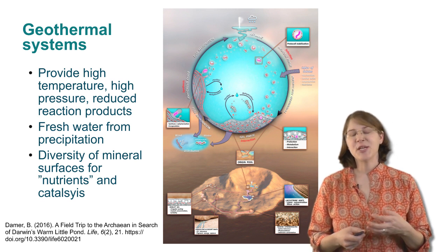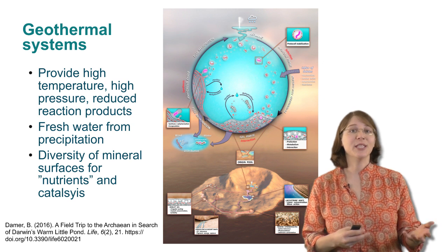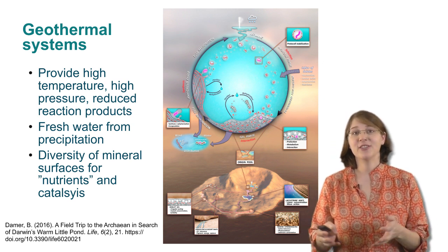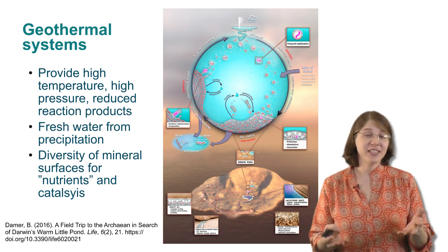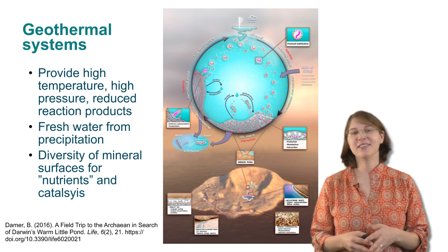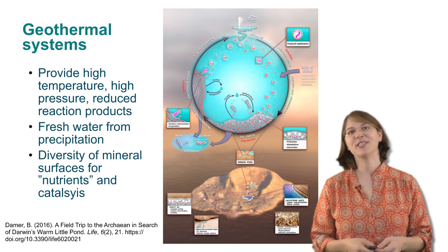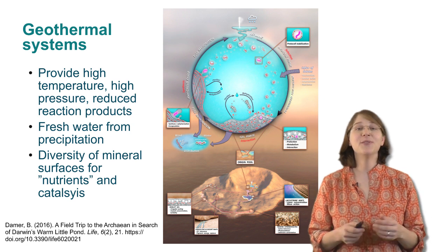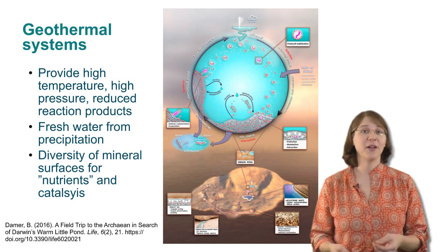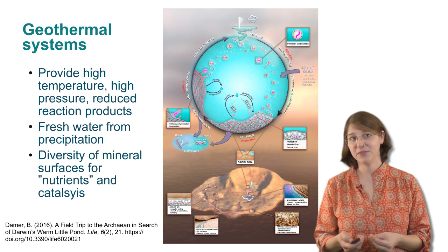Where these locations occur — whether it's deep in the ocean, in volcanic craters, or as pictured here in an impact crater — is highly debated among origins of life scientists. But we do know that there were many different environments on Earth where life could have evolved.